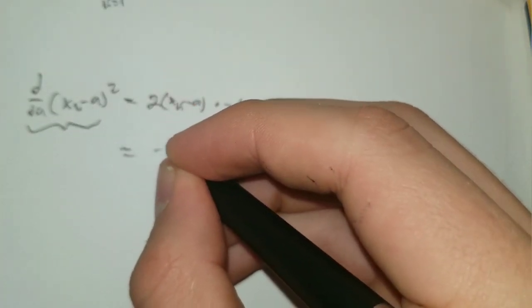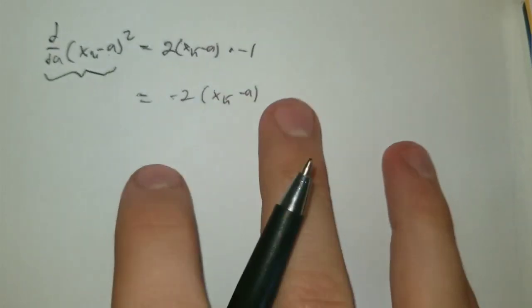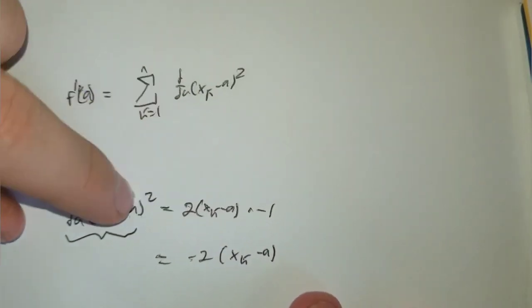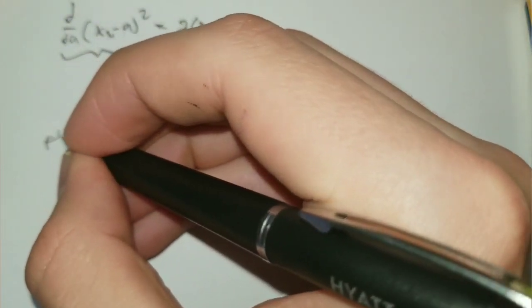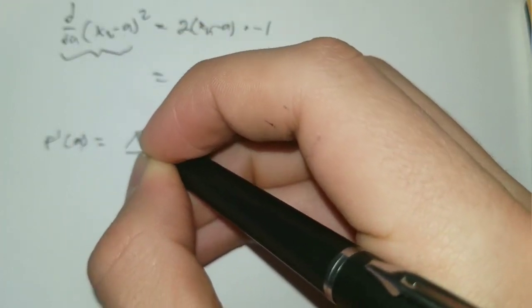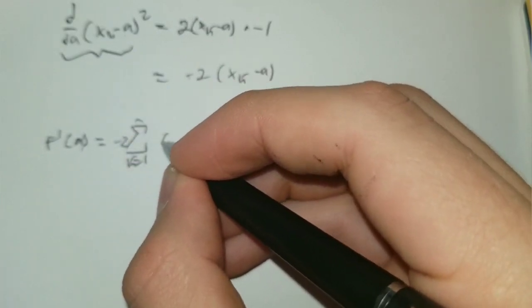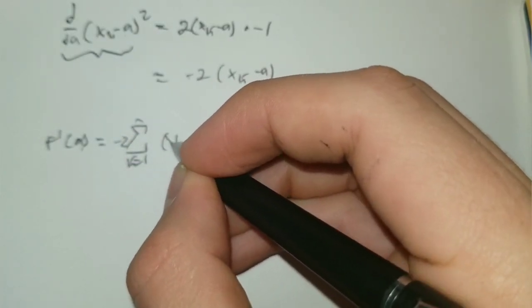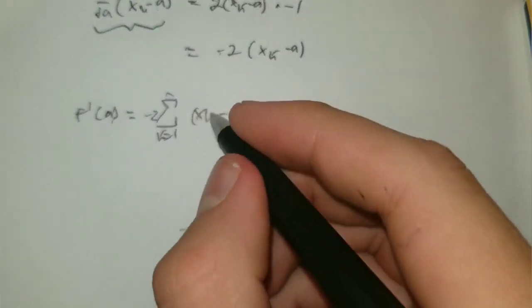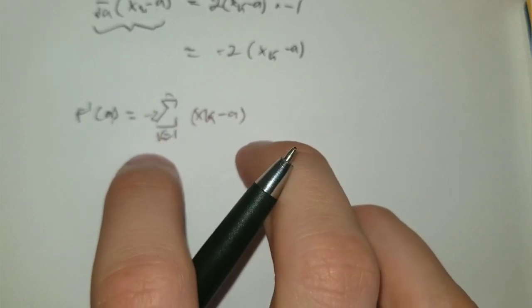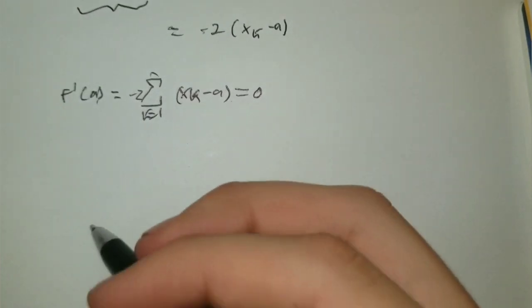plug this in back the series we get f prime of a is equal to negative two times the series. And thereby we have our derivative. We want to set this derivative equal to zero.